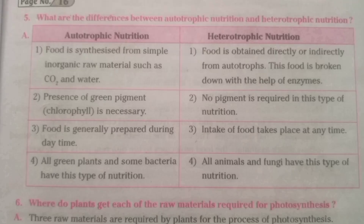What are the differences between autotrophic nutrition and heterotrophic nutrition? In autotrophic nutrition: food is synthesized from simple inorganic raw materials such as CO2 and water; presence of the green pigment chlorophyll is necessary; food is generally prepared during daytime; and all green plants and some bacteria have this type of nutrition.